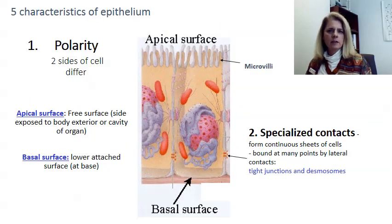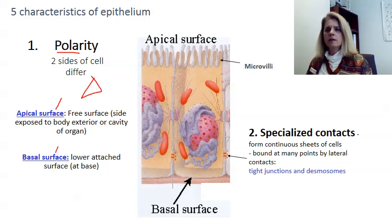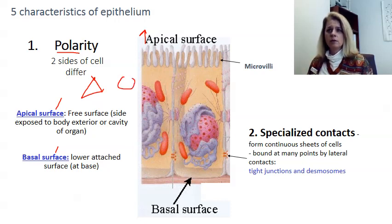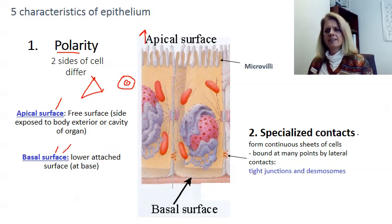There are five characteristics of epithelial tissue. The first one is polarity — that means they have two sides that differ. You have an apical side and a basal side. If you think of a pyramid, you have an apex and a base. The apical side is the free side; it faces either the exterior or a cavity, such as the inside of a tube like a blood vessel or small intestine where blood or food would travel. The basal side is the attached side — it's what connects the epithelial layer to your body.